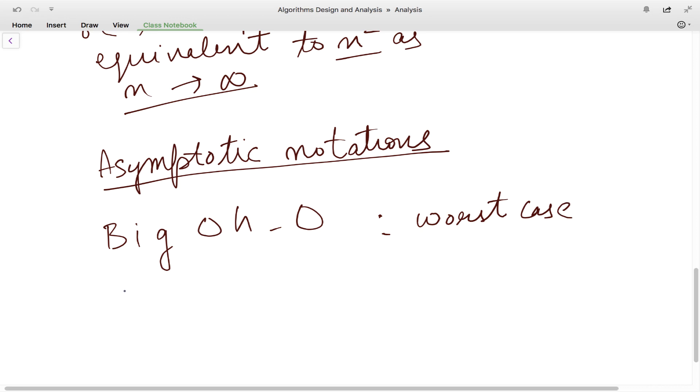Then we have Theta notation which is used for average case. And we also have Omega notation which is used for best case scenario.